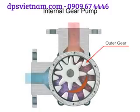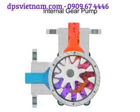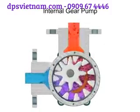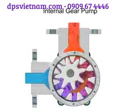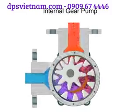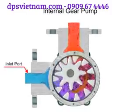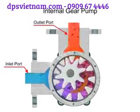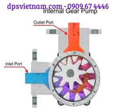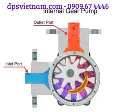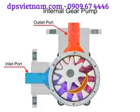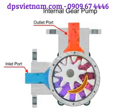As the inner gear rotates, it meshes with and moves the outer gear. Liquid is trapped in the gear spaces and carried from the inlet to the discharge. A stationary crescent-shaped divider separates the intake and discharge portions of the fluid.